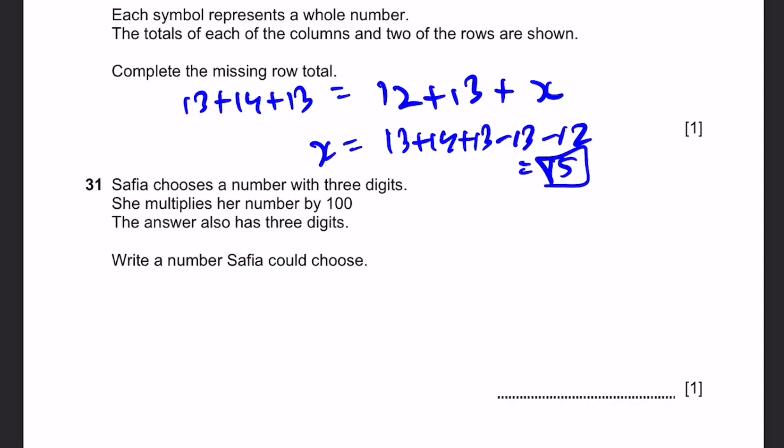Question 31. Safiya chooses a number with three digits. She multiplies her number by 100. The answer also has three digits. Write a number Safiya could choose. This means that the number of digits hasn't changed, but the place value has changed. How is this possible? Of course, we have to include decimals. So let's say we have a number in decimal, 2.5. Multiplying by 100, we get 250. But this is three digits, but then this is only two. So let's just add one more digit. Let's just say three. It doesn't really matter what digits are. It's just a value with one digit before the decimal place and two digits after.